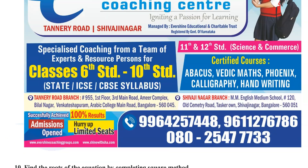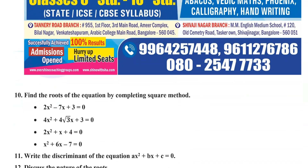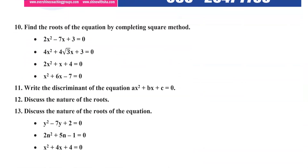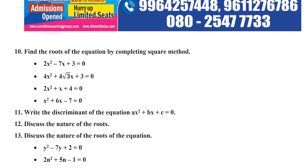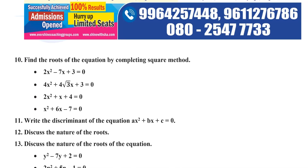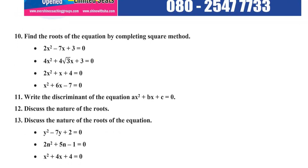We are already running a crash course for class 10 students this year. If any students are interested in the crash course, you can contact us and collect the details. Next question: find the roots of the equation by completing the square method — four options are given, try to solve all four. Next, write the discriminant of the equation Ax² + Bx + C = 0, and find the discriminant.